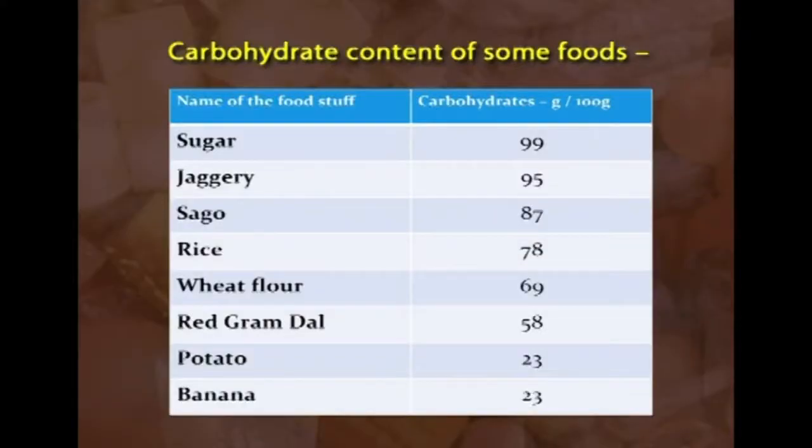Sugars — table sugar, glucose, honey, and jaggery — are also major sources, and milk and milk products are the only source of lactose. In terms of carbohydrate content per 100 grams: sugar has 99g, jaggery 95g, sago 87g, rice 78g, and both potato and banana have about 23g of carbohydrates.